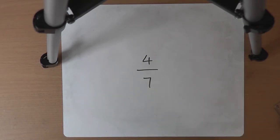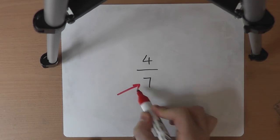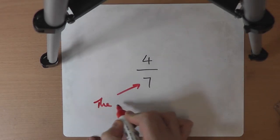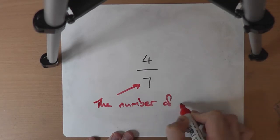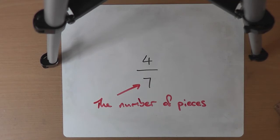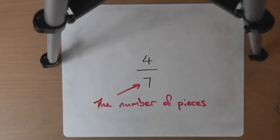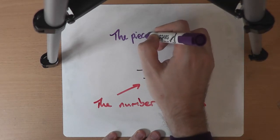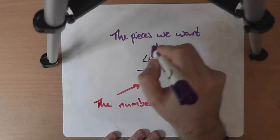We can look at any fraction in this way. The number on the bottom of the fraction — the type of fraction — is the number of pieces we'd have to cut something up into; in this case, it would be seven equal-sized pieces. And then the number on the top is the number of those pieces that we are interested in. In this case, we'd be interested in four out of those seven. If we had three-sevenths, we'd be looking at three out of the seven.